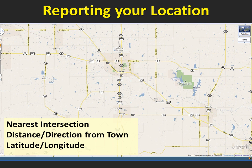Everyone in your town might know exactly where the old Smith house used to be before it burned down, but using that location in your spotter report won't help the weather service or anyone else who's not familiar with that spot. More spotters are using GPS and are able to give us latitude and longitude coordinates, and that's helpful as long as those coordinates are relayed with no errors.